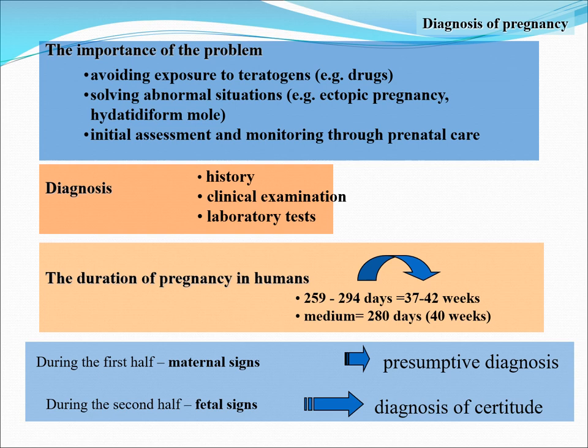Diagnosis could be done through history, a thorough clinical examination, and laboratory tests. The duration of pregnancy in humans would be 259 to 294 days, that is 37 to 42 weeks. The median would be 280 days, which is 40 weeks, which when computed would be your expected date of confinement or EDC.